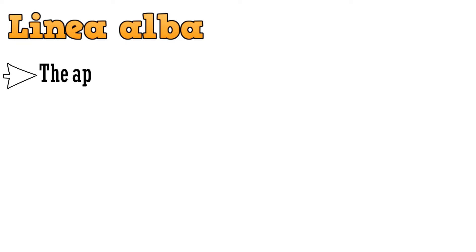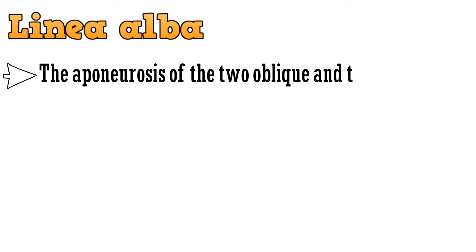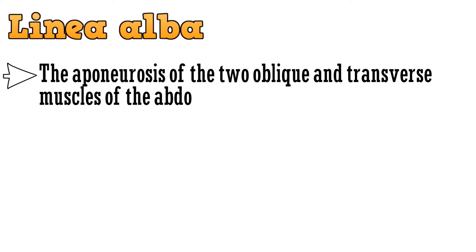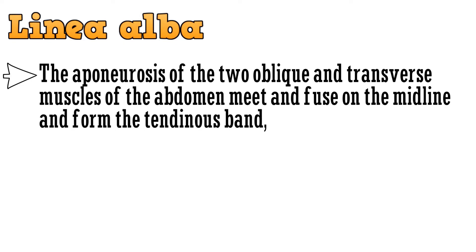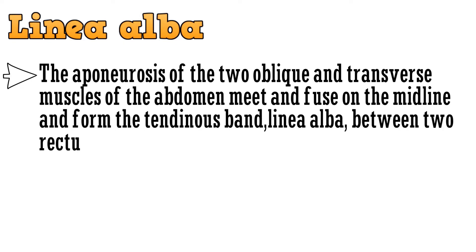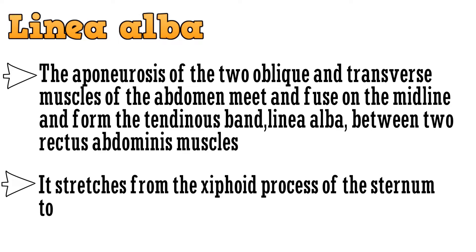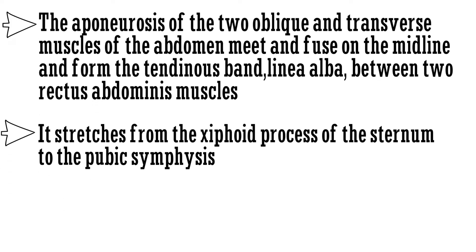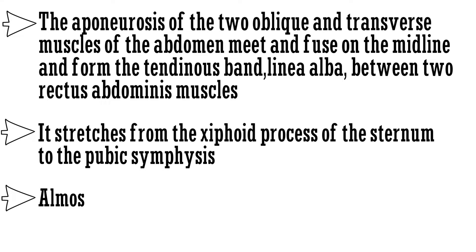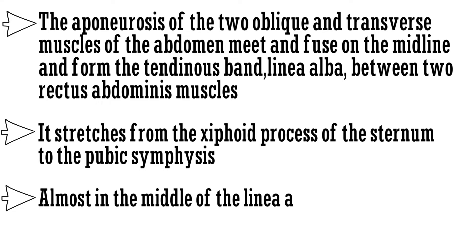Now let's discuss about the linea alba. The aponeurosis of the two oblique and transverse muscles of the abdomen meet and fuse on the midline and form the tendinous band, linea alba, between the two rectus abdominis muscles. It stretches from the xiphoid process of the sternum to the pubic symphysis, and almost in the middle of the linea alba is the umbilicus.